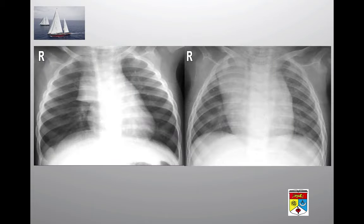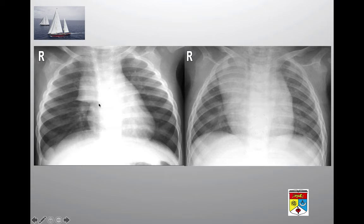Looking at these two radiographs of a one-year-old, there is an opaque triangular-shaped structure — this is the 'sail sign' representing a normal thymus in the superior mediastinum. It is normal because you can actually see lucency underlying it, representing aerated lung behind the thymus. The trachea and the airfield trachea are not compressed or displaced, meaning there is no abnormal mass in the superior mediastinum — just the thymus, which has not yet involuted.